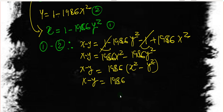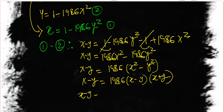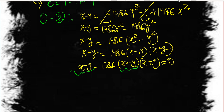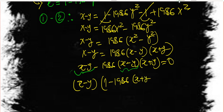Since x squared minus y squared factors as (x minus y)(x plus y), we have X minus Y equals 1986 times (x minus y)(x plus y). Bringing everything to the left side: (x minus y) minus 1986(x minus y)(x plus y) equals zero. Factoring out (x minus y), we get (x minus y) times (1 minus 1986(x plus y)) equals zero.